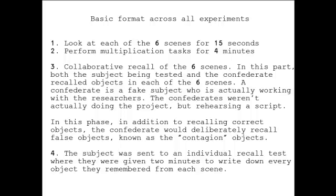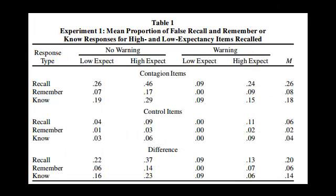In addition to recalling objects, the Confederate would deliberately recall false objects, known as the contagion objects. The subject was then sent to an individual recall test where they had two minutes to write down every object they remembered from each scene. Also, half of the subjects were warned about the possibility of social contagion of memory, and the other half were not.